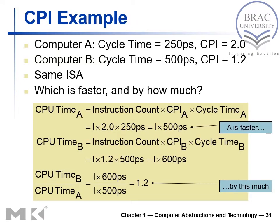Consider an example with computer A and computer B. For computer A, cycle time is 250 picoseconds and CPI is 2. For computer B, cycle time is 500 picoseconds and CPI is 1.2. Both computers use the same ISA — let's assume MIPS, the architecture we are going to discuss in our course.